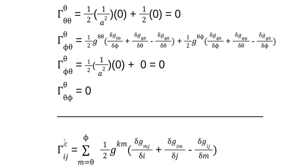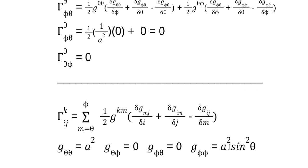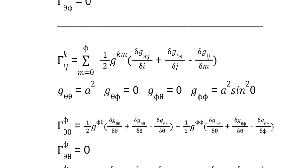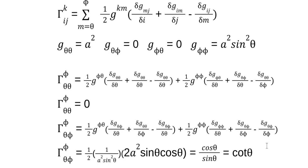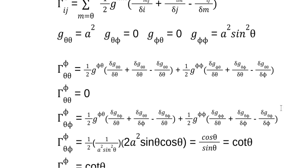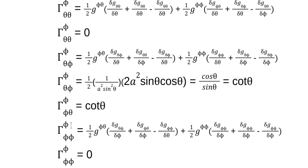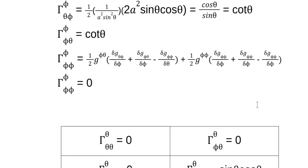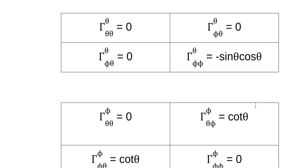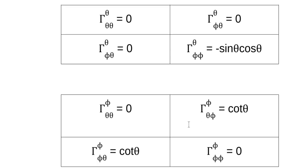Let's do the next one with the k index being phi. We do the exact same procedure — here's our metric again. The first one is zero; the next one has that same derivative in it, but this time we've got 1/(a² sin²θ) as our inverse. So that cancels, and we're left with cos θ / sin θ, which is cot θ. We do the next one and get the same answer; we do the last one and get zero. So for k index phi, we get two non-zero components. Here's what they all look like: one non-zero for k=theta and two non-zeros for k=phi.